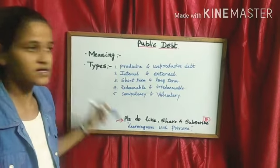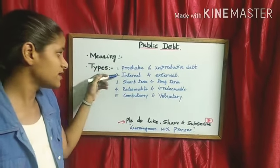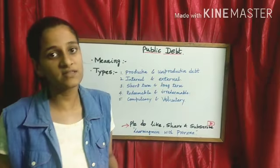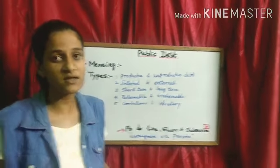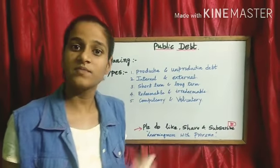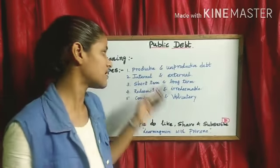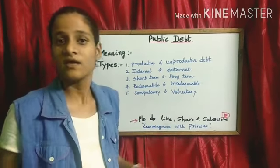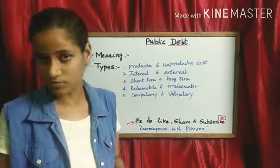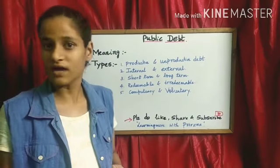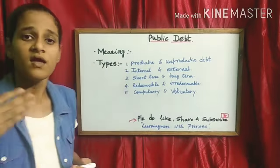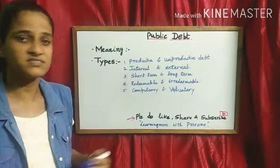Internal and external debt. When we come to internal debt, the government is going to borrow money within the country, inside the country. It may be the central bank, it may be a commercial bank, etc. When we come to external debt, the government is going to borrow money outside the country. Example, the International Monetary Fund or other financial institutions.